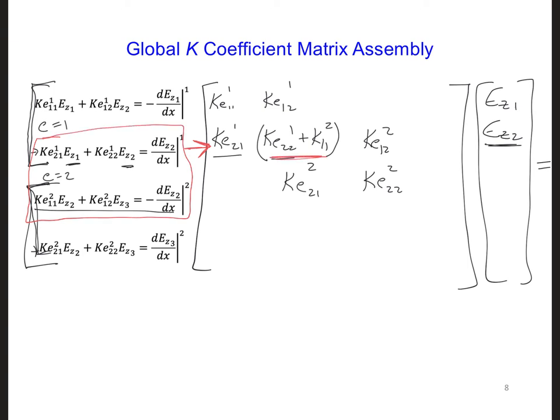And this second row here corresponds to the equation that we got after we added these two equations together. Remember, we add these two terms together. They were both multiplied by Ez 2.